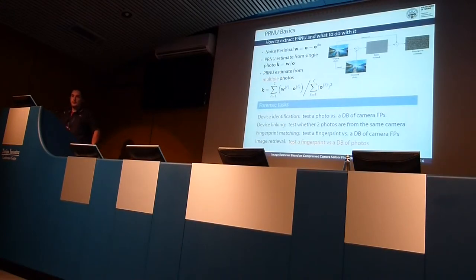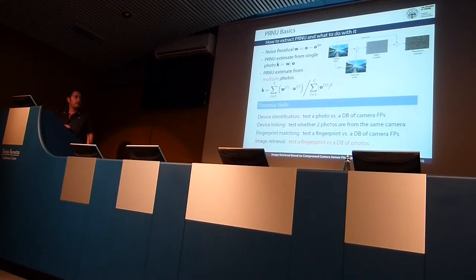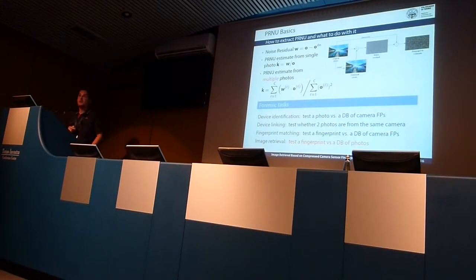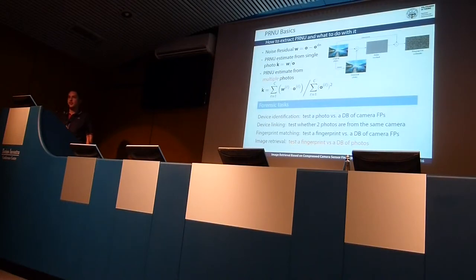What tasks are usually implemented with PRNU? Typical forensic tasks include device identification — given a photo and a database of devices, determine which device took the photo — and testing whether two different photos were taken by the same camera, or whether a specific fingerprint belongs to a specific set of fingerprints. A completely new problem not yet addressed in the literature is the image retrieval problem: given a fingerprint and a dataset of pictures, determine which pictures were taken by the camera with that specific fingerprint.